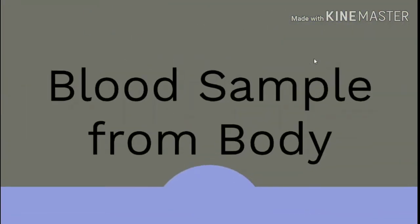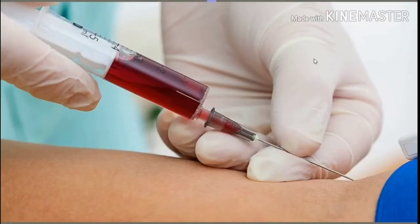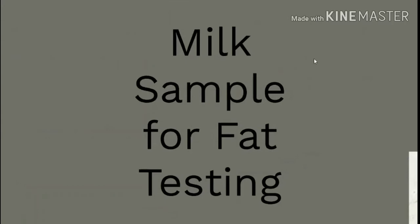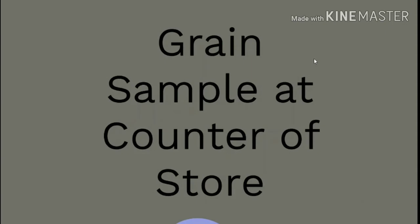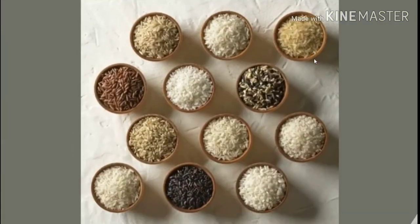To test the blood of a person, the pathologist takes some sample of blood from the body. To test the fat in meat, a sample of meat is tested with the machine. To test the quality of grain in a store, samples of grain are systematically arranged at the counter of that store.